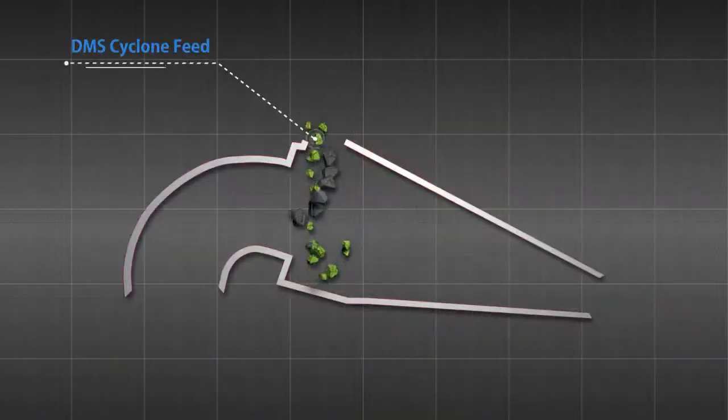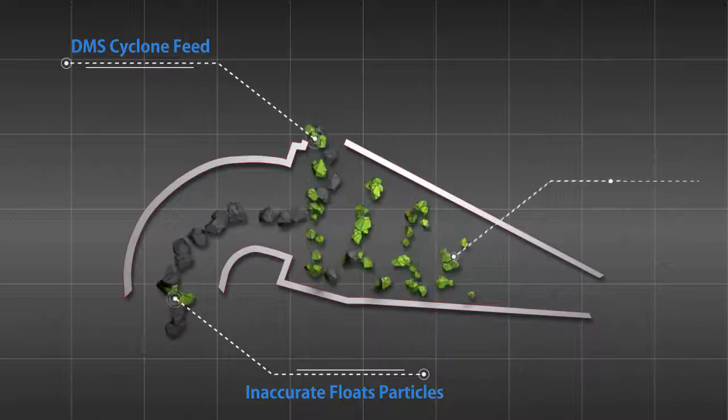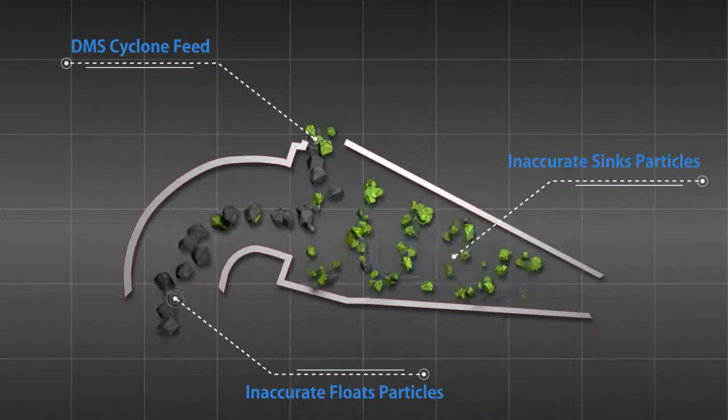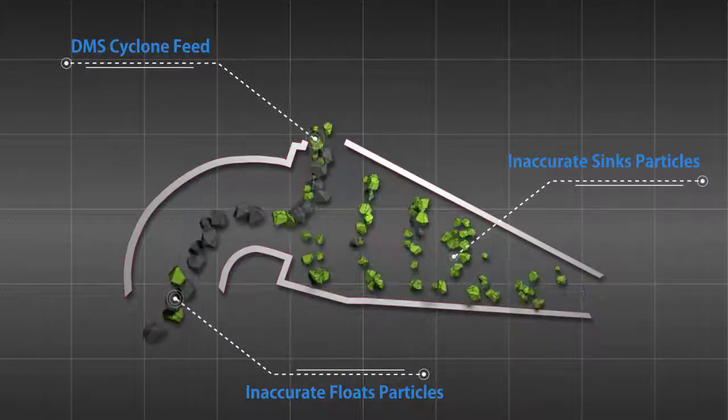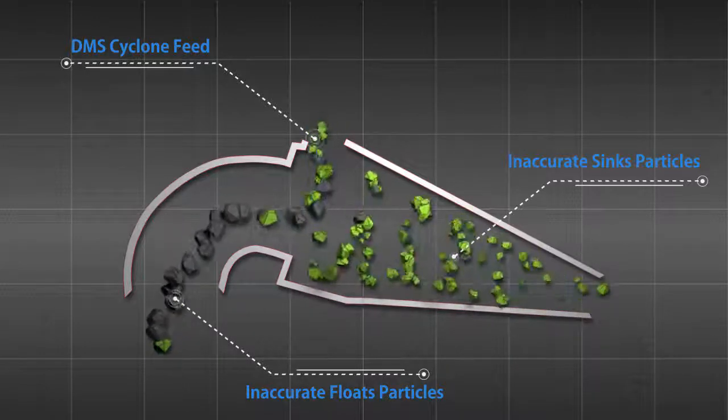A common density-based separation method used in the mining industry is dense-medium separation, where dense particles sink to the cyclone underflow and the lighter particles float to the overflow. To gauge the efficiency of the process,